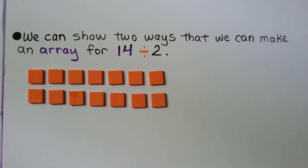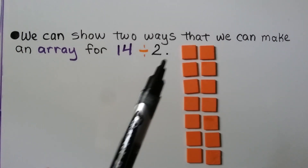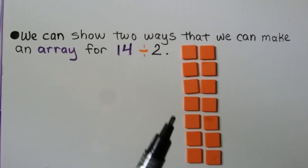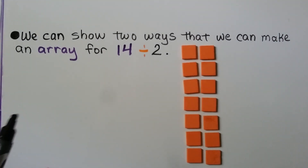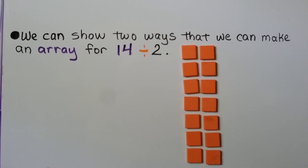We can also put 2 in each row. We still have 14 counters, but now we have 2 in each row and we count the rows: 1, 2, 3, 4, 5, 6, 7 rows. 14 divided by 2 is equal to 7. So we can make them as 2 rows, or 2 in each row for the array.